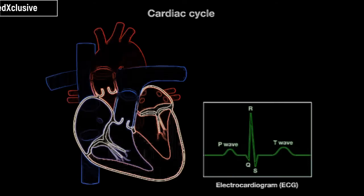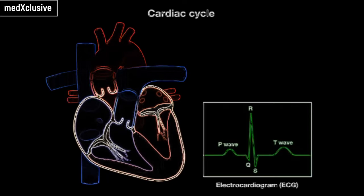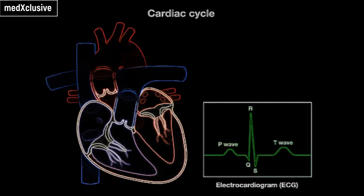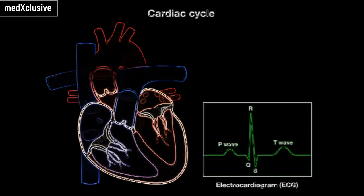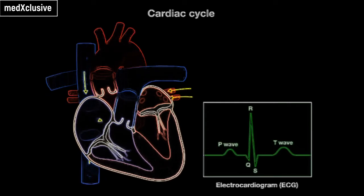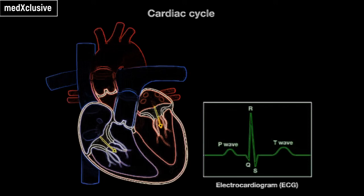A single cardiac cycle is made up of the events associated with one heartbeat. Each cardiac cycle takes about eight-tenths of one second. During each cardiac cycle, pressure changes occur within the chambers of the heart as they relax and contract. As the chambers relax, they fill with blood — this is called diastole. When the chambers contract, the blood is expelled — this is called systole.